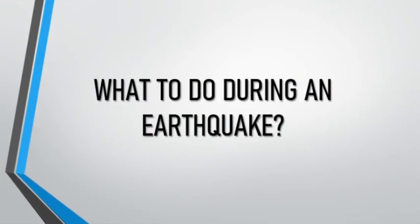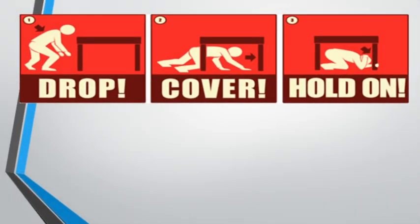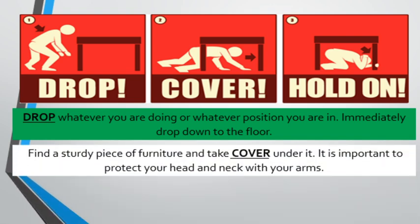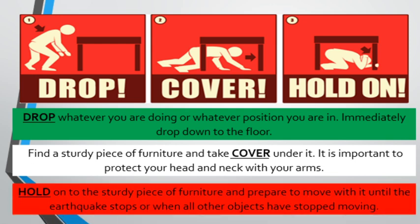What should we do during an earthquake? Primarily, when an earthquake takes place, we have to drop, cover, and hold — as we have been taught during school earthquake drills, and hopefully we can apply it even at home. Drop: whatever position you are in, immediately drop down to the floor. Find a sturdy piece of furniture and take cover under it. It is very important to protect your head and neck with your arms. Hold onto a sturdy piece of furniture and prepare to move when the earthquake stops or when all objects have stopped moving.